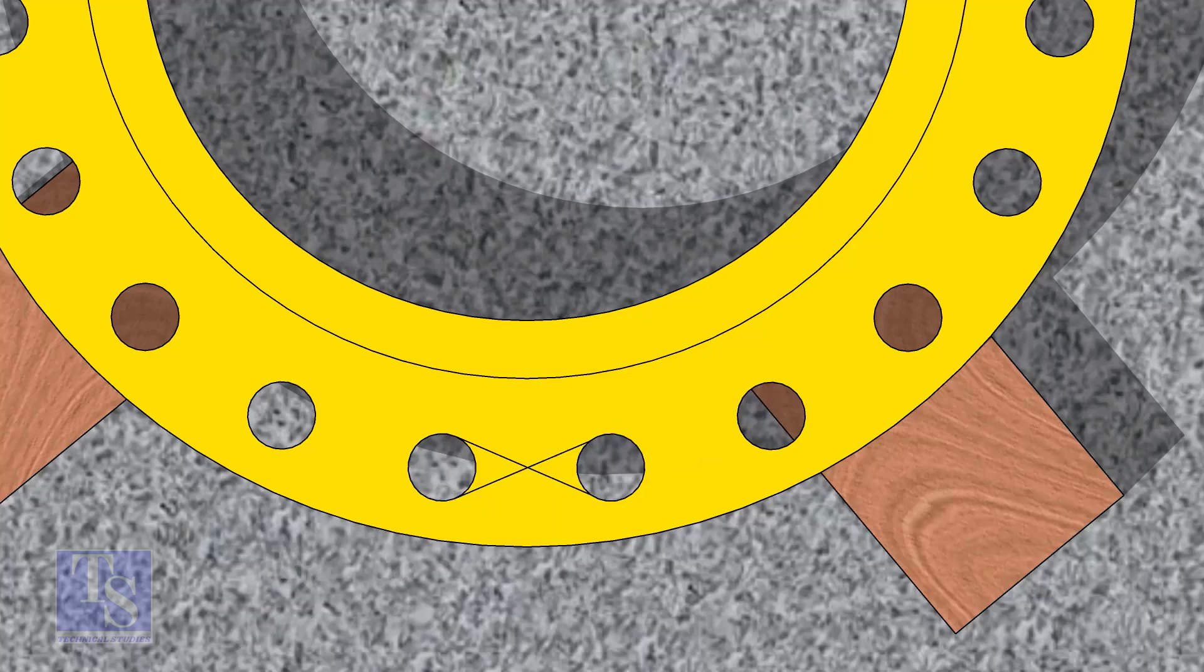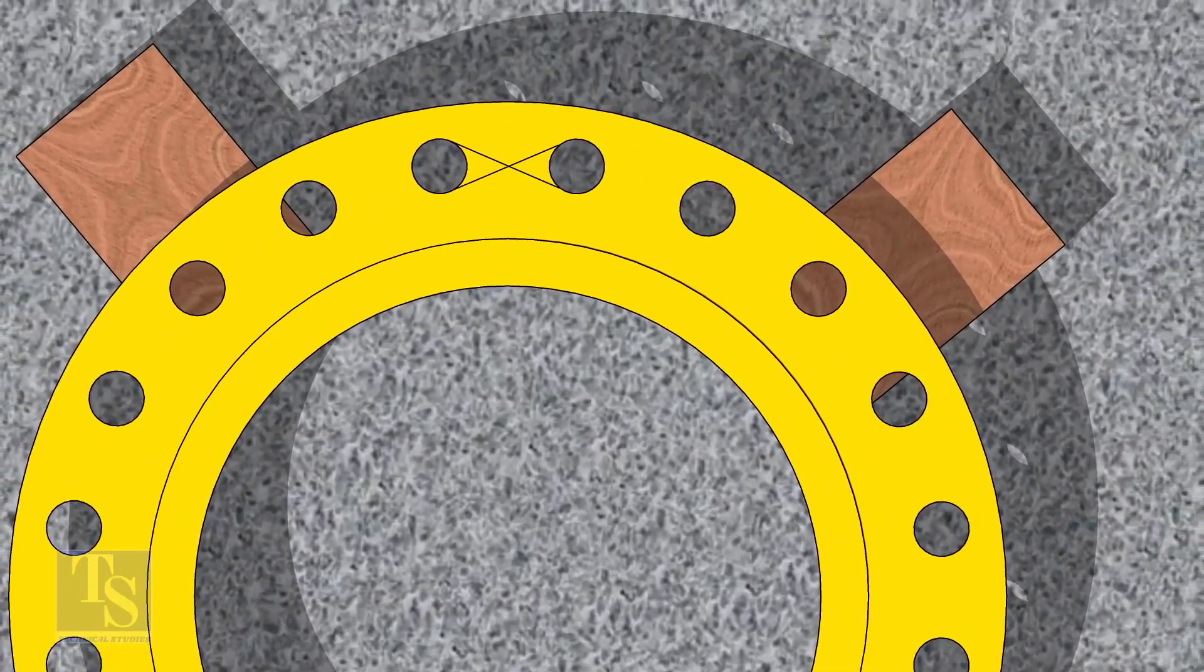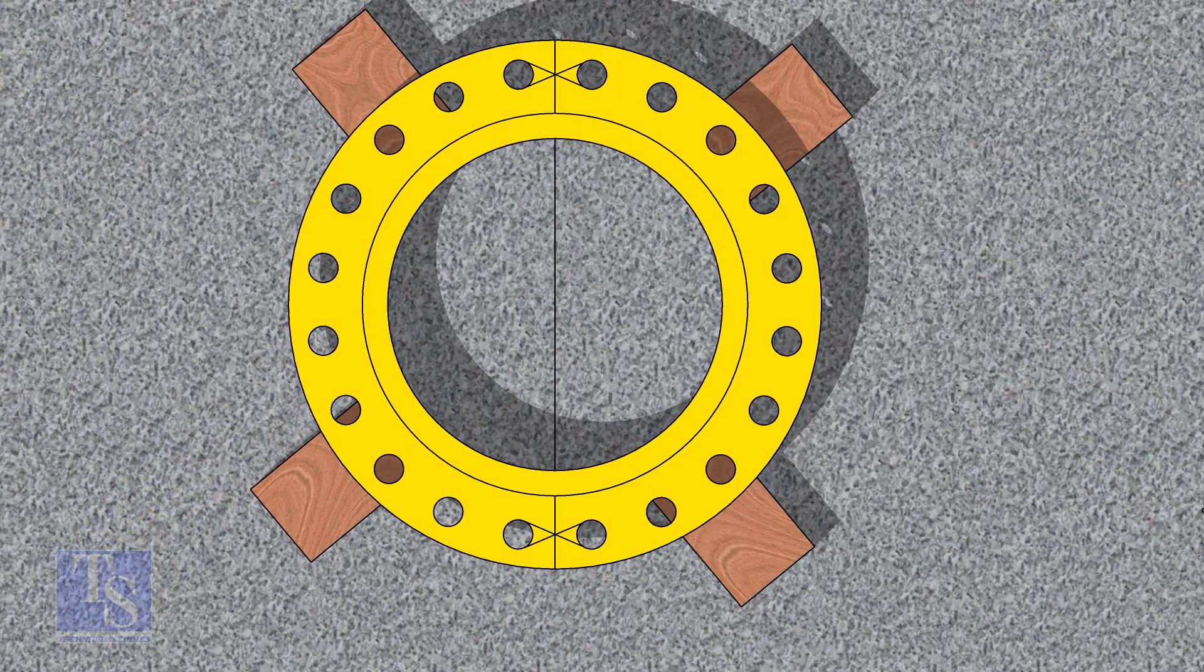Draw the center of the two holes on the opposite side. Draw the center line of the flange as shown.